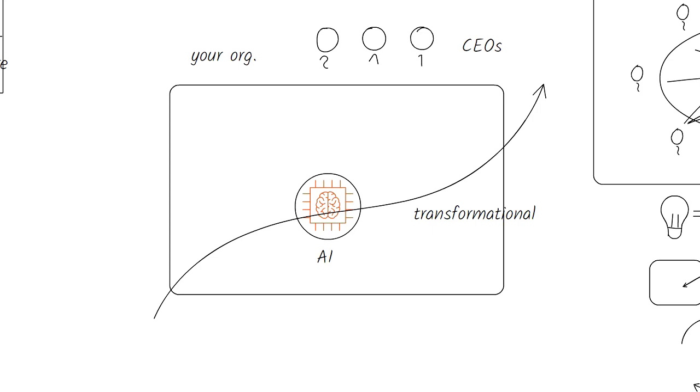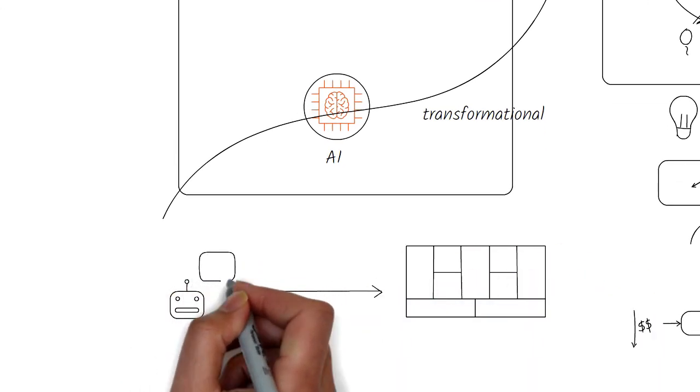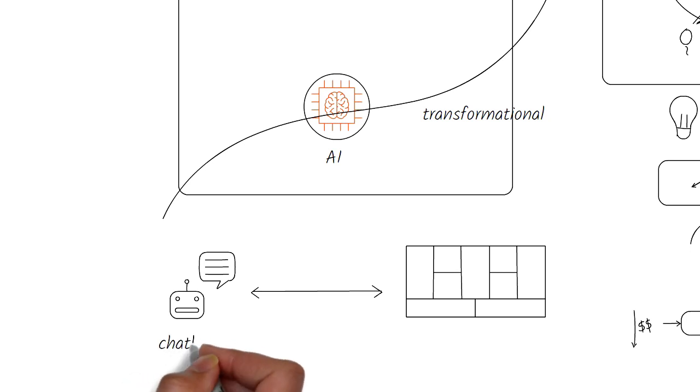This implies that as companies bring AI into their organization, they need to do so in a systematic and strategic way. One of the questions is, given your company's specific resources, strengths, and ecosystem, what's the best way to use AI? Should you start off with a chatbot? Or should you fundamentally rethink your business model?